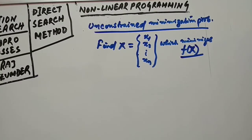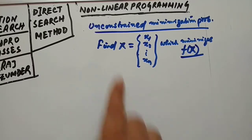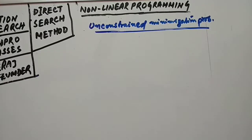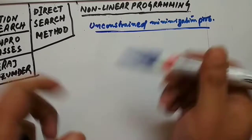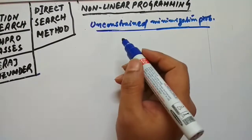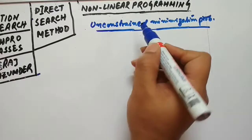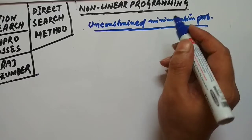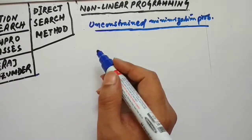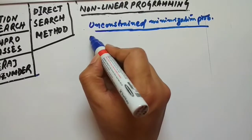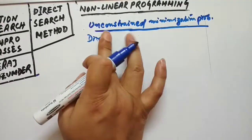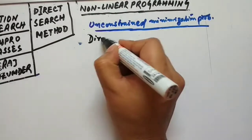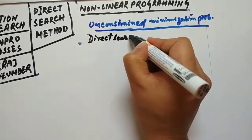In unconstrained minimization problems there are many techniques. I will give you a short overview of different techniques, but in your syllabus there are only two methods: one is the direct search method which we are going to solve today, and another one we will solve in our next class — that is the steepest descent method. So let me write the direct search methods.